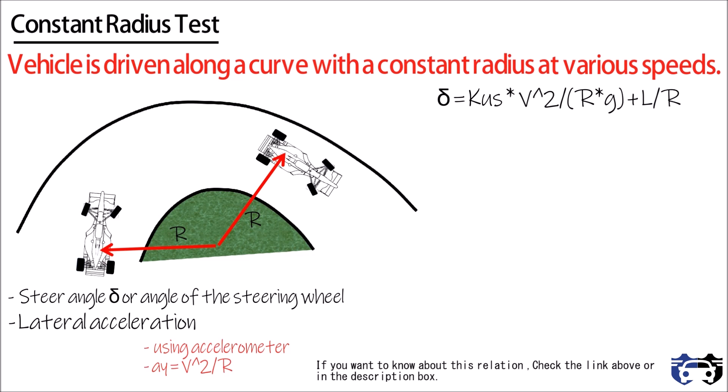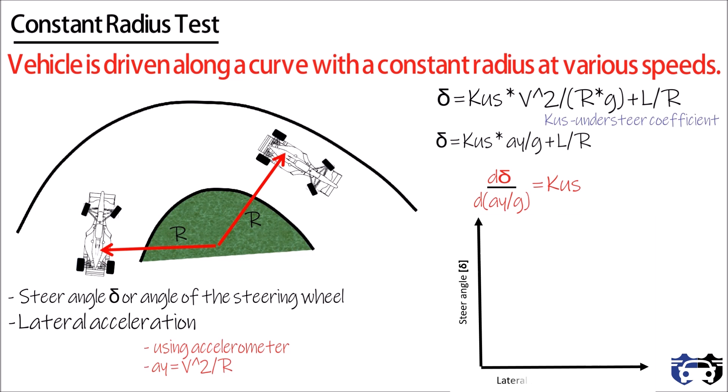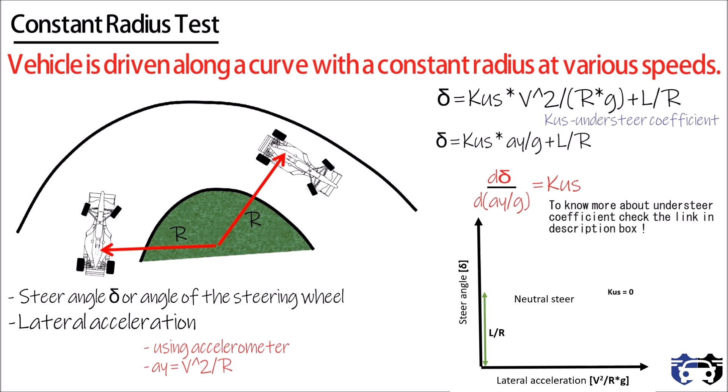The relation between delta and the coefficient of understeer is given by this equation. On differentiating delta with respect to lateral acceleration, we get: d(delta)/d(ay/g) equals kus. On plotting the curve between steering angle delta and lateral acceleration, we get the handling behavior of the car. If we put lateral acceleration equals to 0 in this equation, we get delta equals L divided by R.